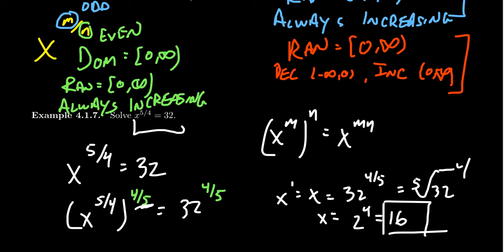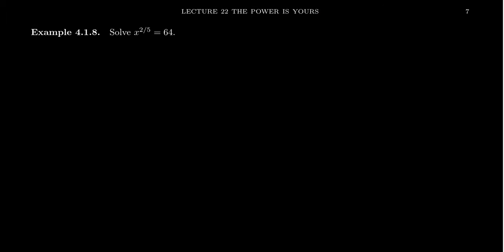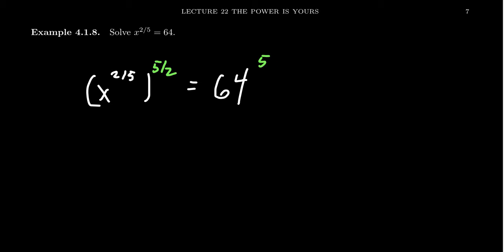Notice we raised both sides to the four-fifths power. Because the denominator is odd, this is a one-to-one function with a true inverse, so things work cleanly. But the next example requires caution. For x to the two-fifths equals 64, we raise both sides to the five-halves power — the reciprocal of two-fifths. On the left the two-fifths and five-halves cancel, and on the right we have the square root of 64 raised to the fifth. Because we're taking a square root, there are two solutions — we need a plus or minus.